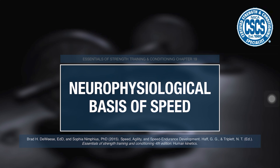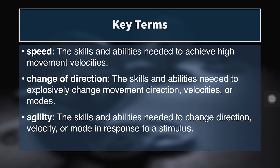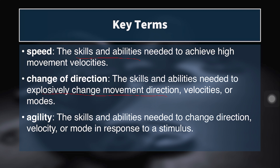Today we're talking about the neurophysiological basis of speed. First we have to define some key terms. Speed refers to the skills and abilities needed to achieve high movement velocities. Change of direction is different from speed — these are the skills and abilities needed to explosively change movement direction, velocities, or modes, including accelerating, decelerating, planting, and pivoting. Agility adds a response to a stimulus: the skills and abilities needed to change direction, velocity, or mode in response to a stimulus, with both a cognitive and perceptual component.